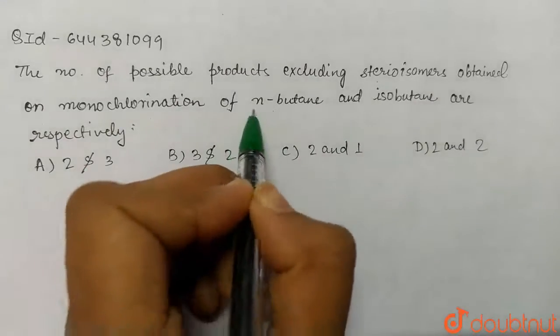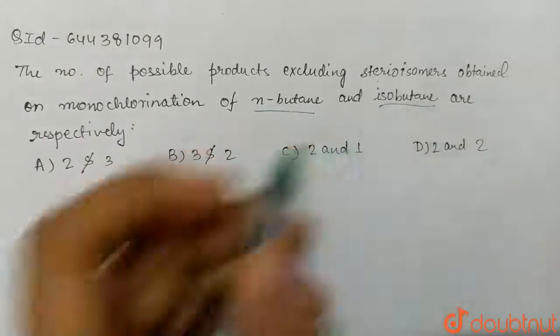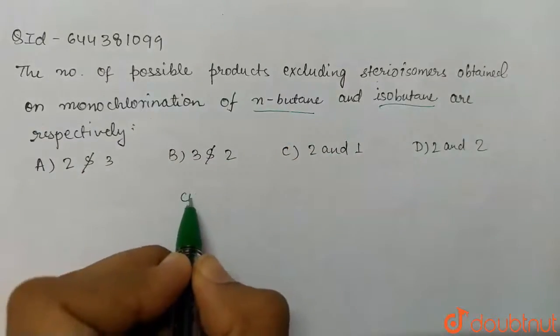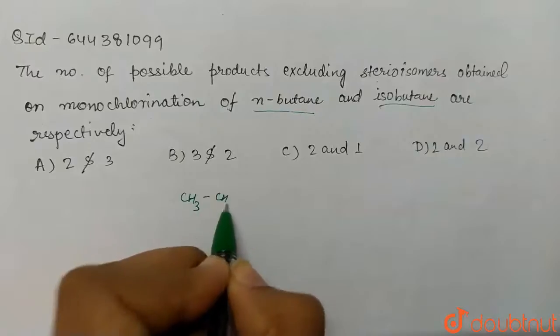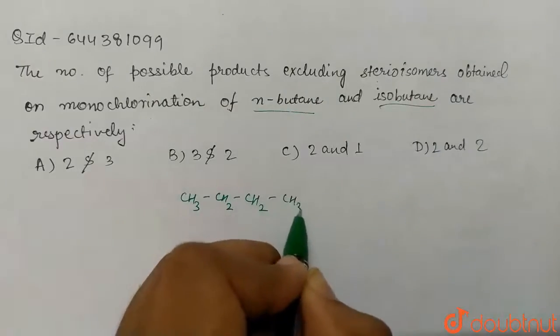So here we have two compounds: N-butane and isobutane. The formula for N-butane is CH3, CH2, CH2, CH3.